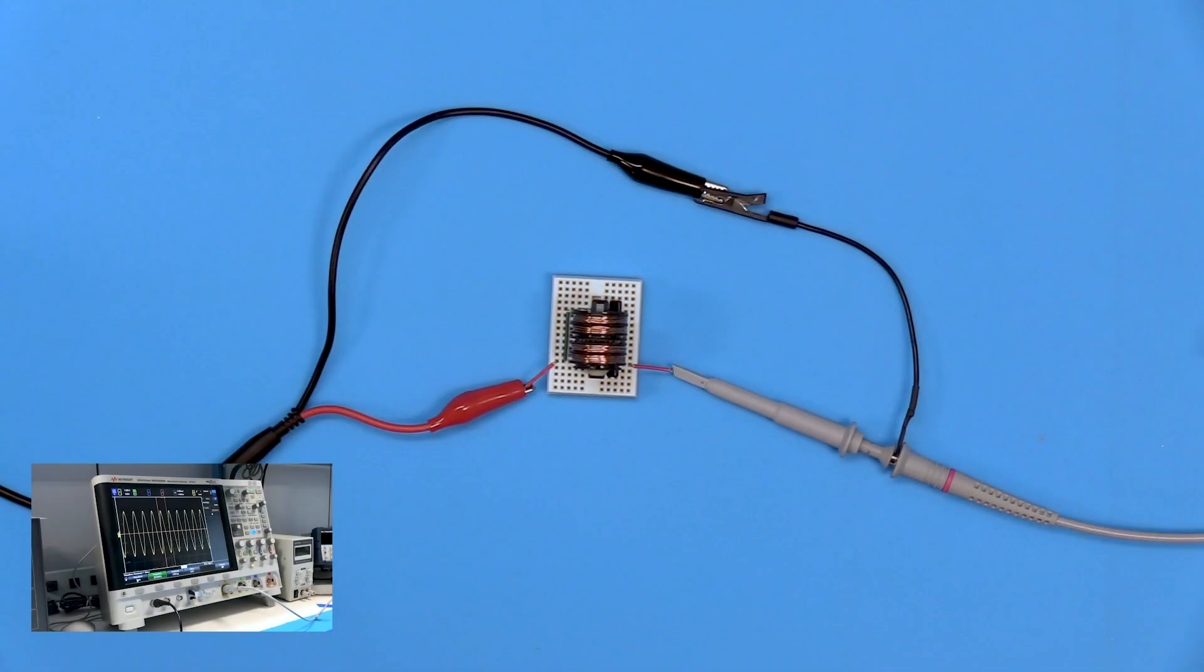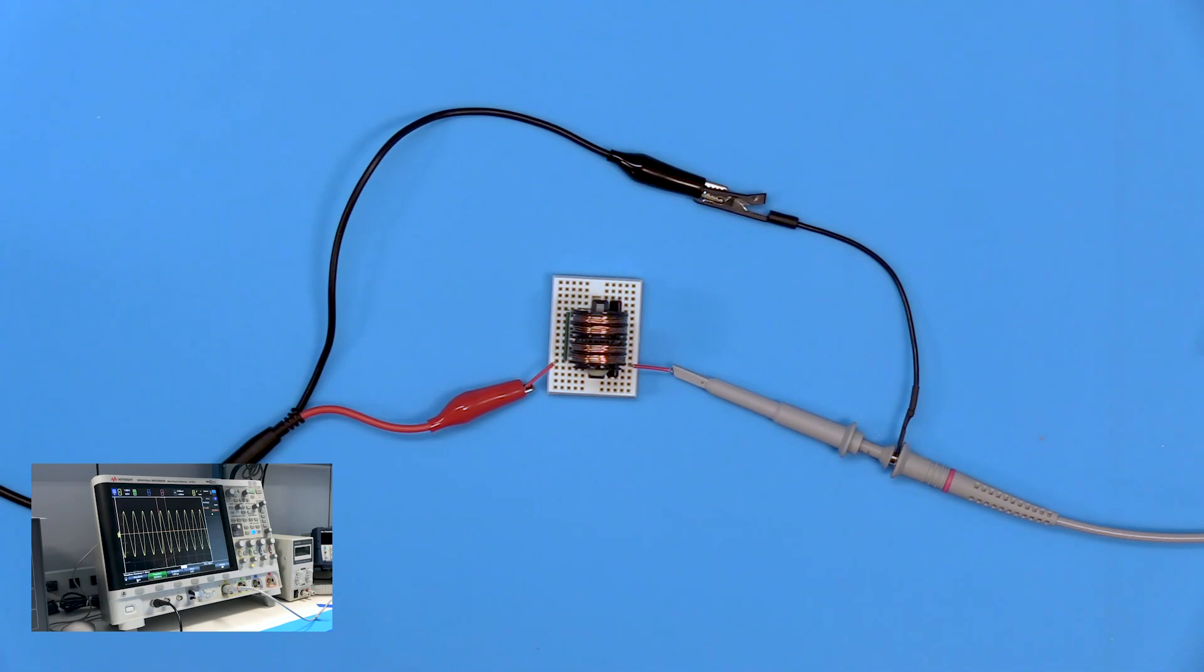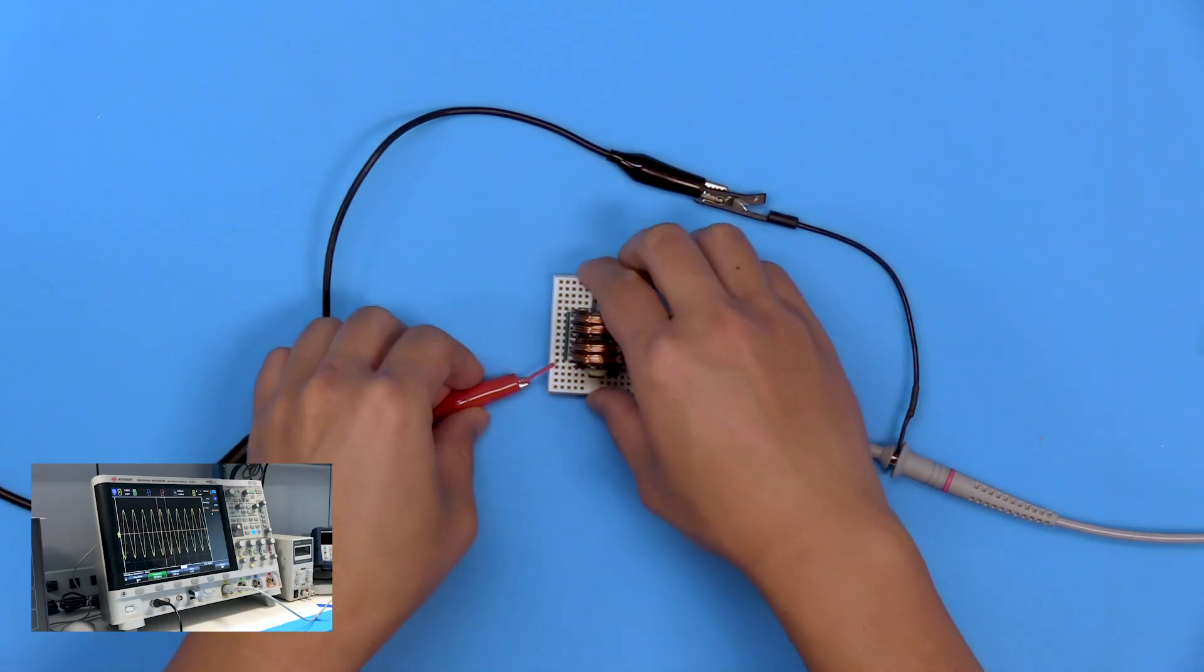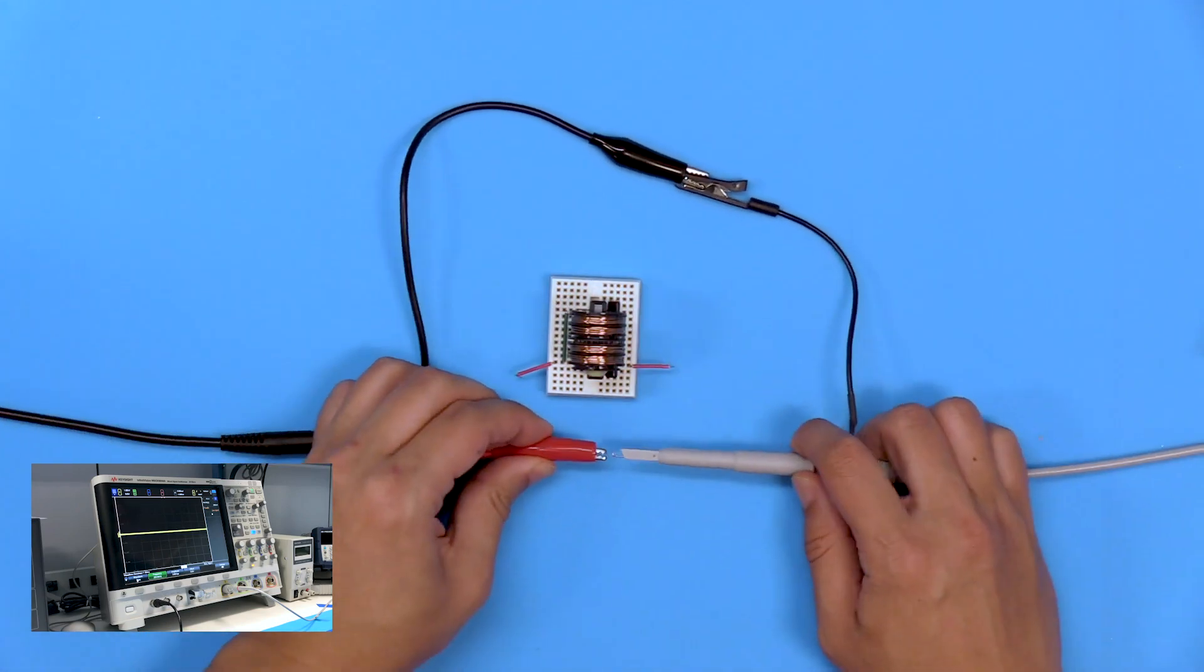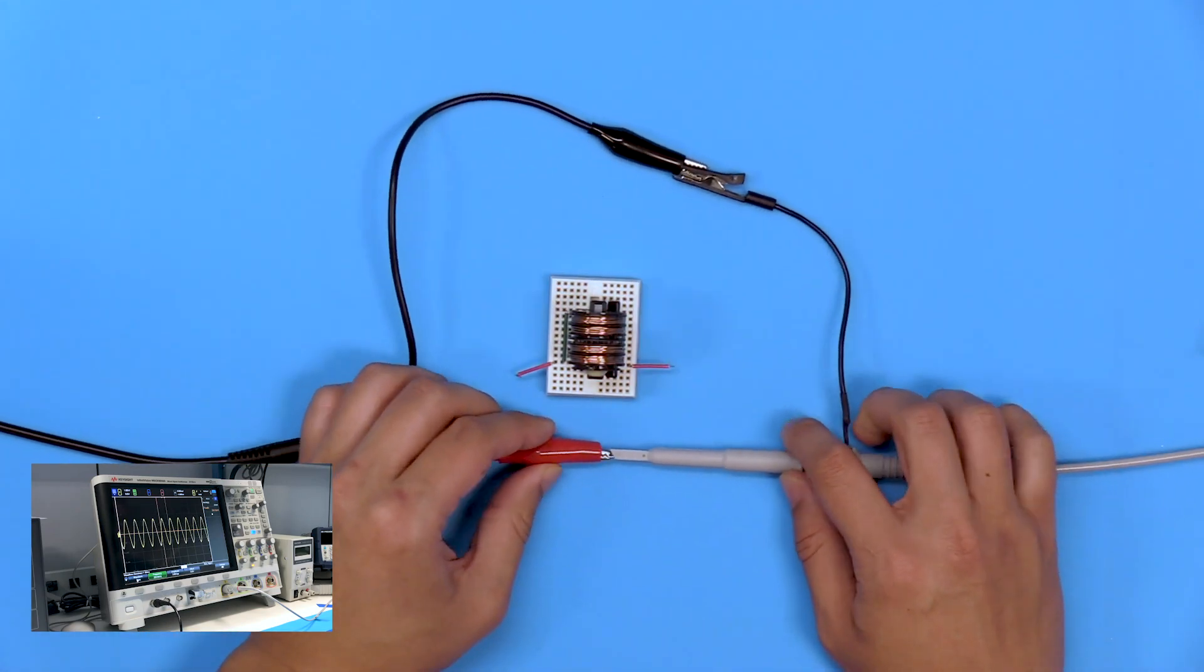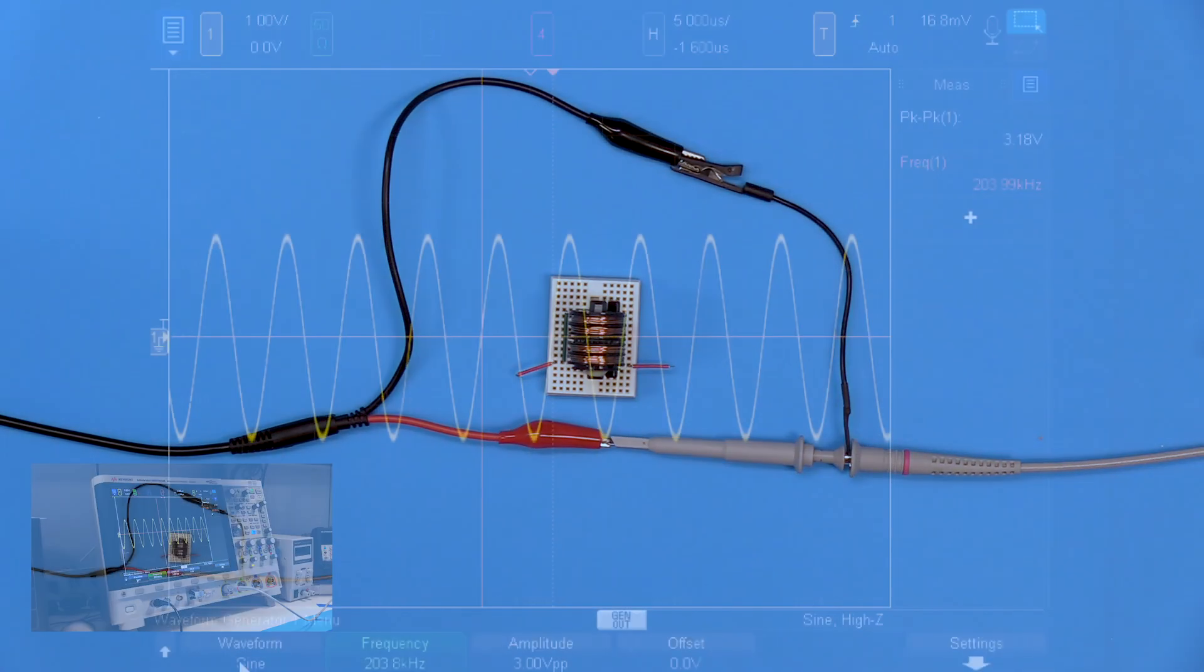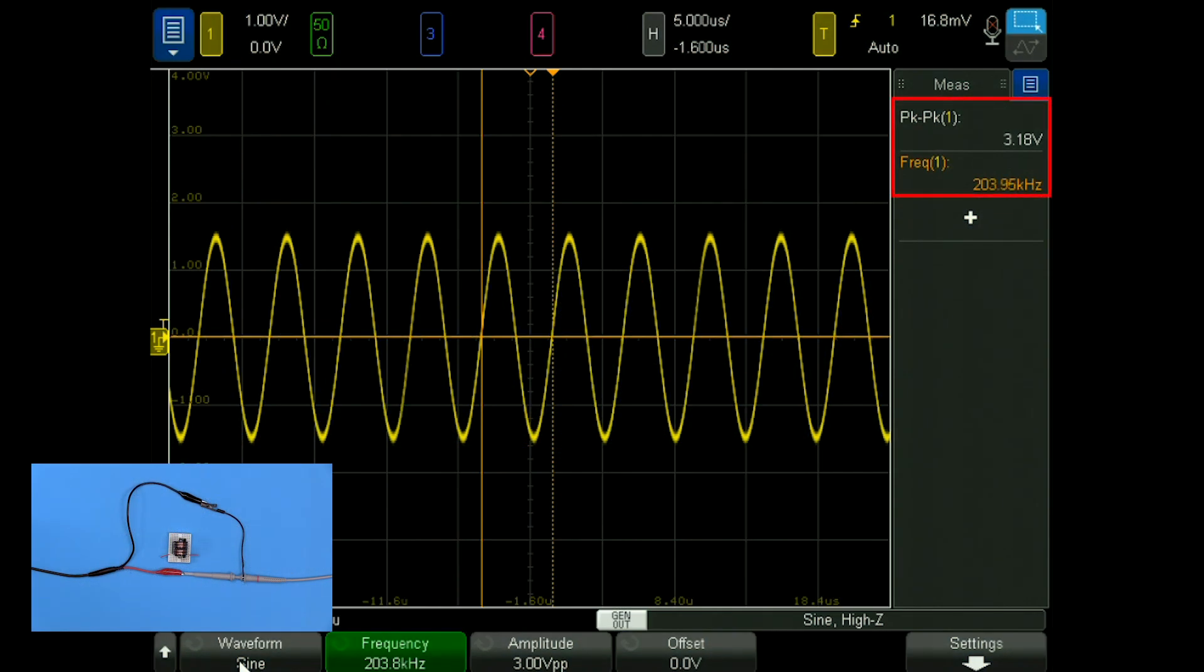First, let's check if we are getting the right reading from our waveform generator. Let's remove the choke and connect directly to the output of our waveform generator. We can see the waveform generator is outputting the correct voltage into our probe.